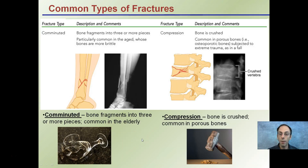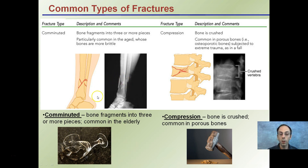A comminuted fracture is where the bone fragments into three or more pieces. This is commonly seen in the elderly, who tend to have more brittle bones and as a result they tend to split into more pieces. I've tried to provide a picture with each fracture type to help you remember what type of fracture is occurring.